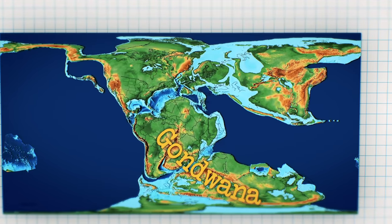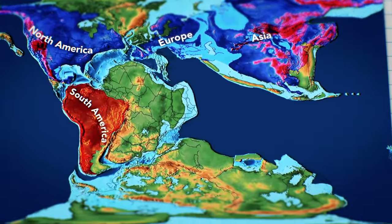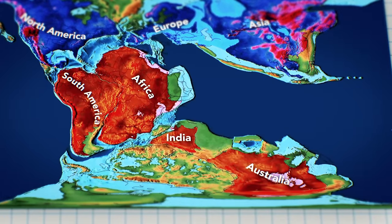Contained within Laurasia was North America, Europe, and, well, most of Asia, while Gondwana was a conglomerate of South America, Africa, India, Australia, Oya, and Antarctica.